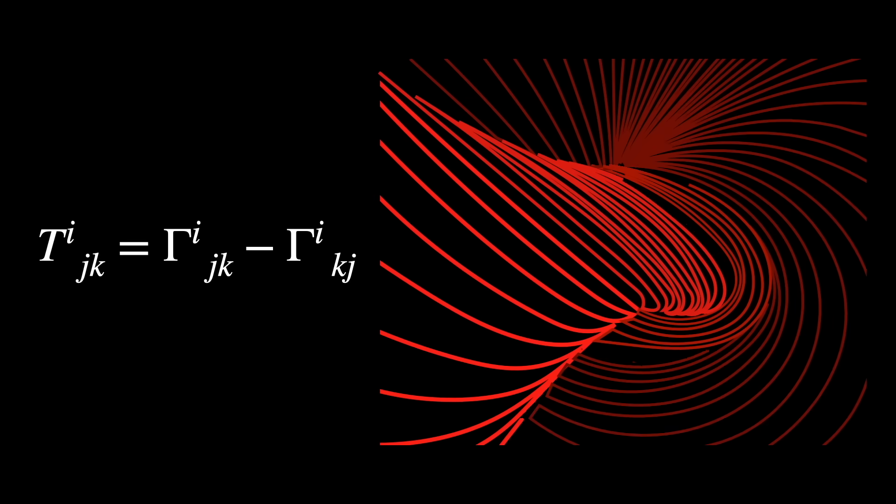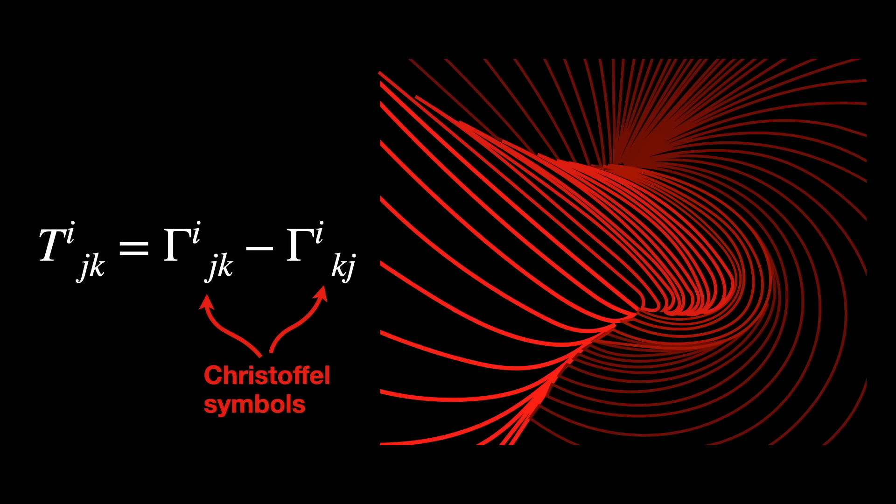Three, the torsion tensor, Tⁱⱼₖ. The type is rank (1,2). This tensor measures how much twist happens when you try to move vectors around in space. In other words, it measures if moving from A to B results in a different direction compared to moving from B to A. In this case, the torsion tensor is not trivial.